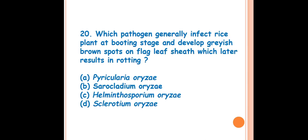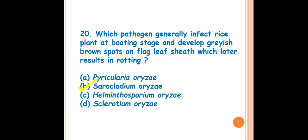Question 20: Which pathogen generally infects the rice plant at booting stage, develops grayish brown spots on the flag leaf sheath, which later results in rotting? The answer is B — Sarocladium oryzae. This is the causal organism of sheath rot of rice, and the grayish-brown spots on the flag leaf sheath that later rot is its characteristic symptom.